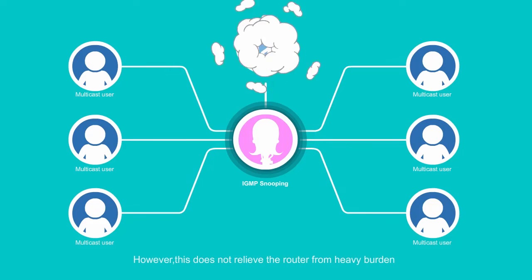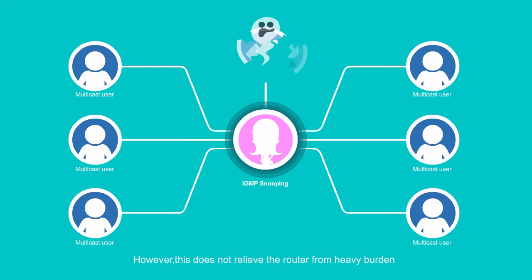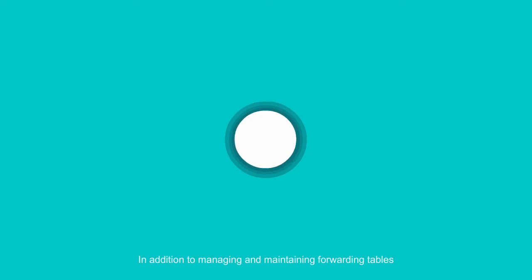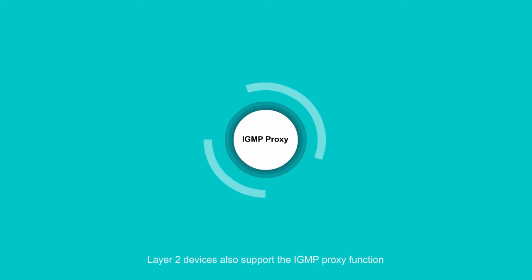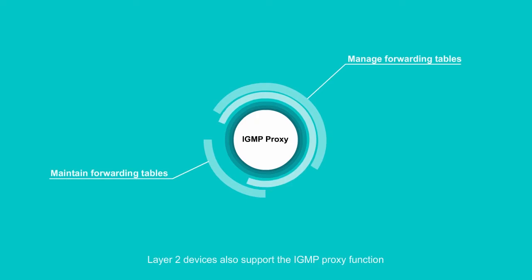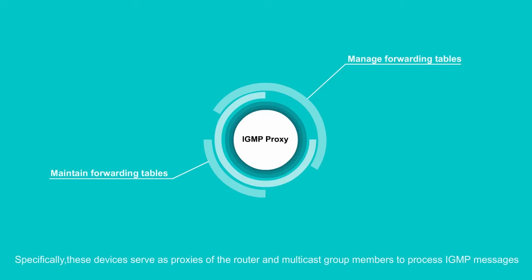However, this does not relieve the router from the heavy burden. In addition to managing and maintaining forwarding tables, Layer 2 devices also support the IGMP proxy function. Specifically, these devices serve as proxies of the router and the multicast group members to process IGMP messages.